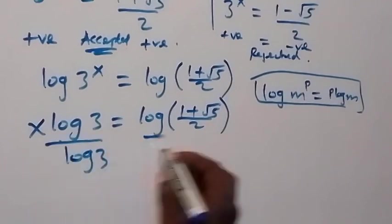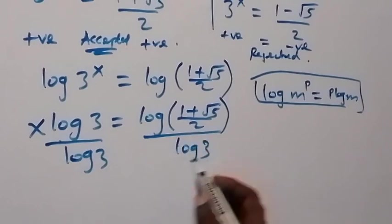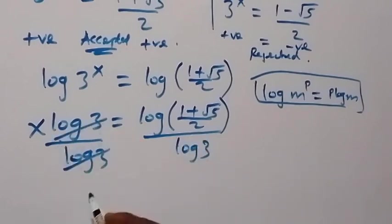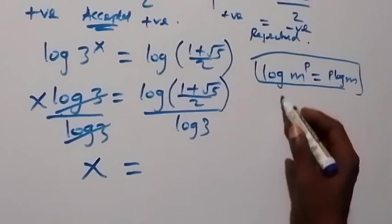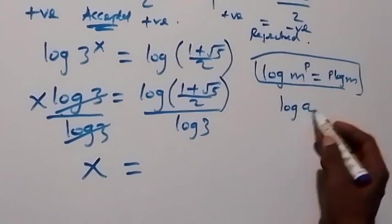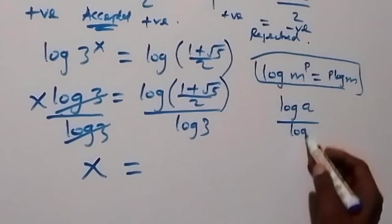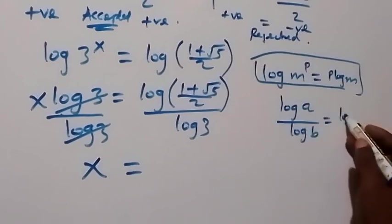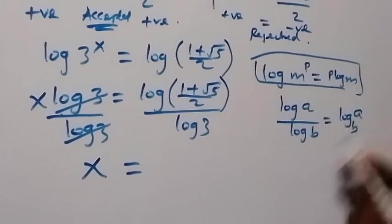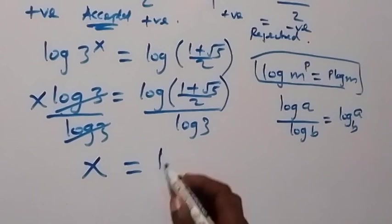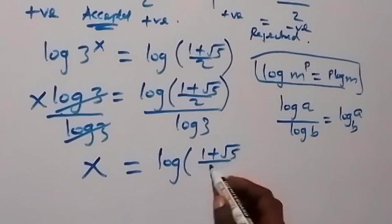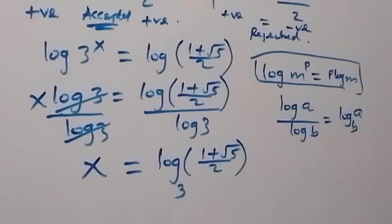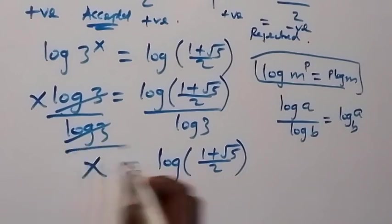Dividing both sides by log 3, log 3 cancels and we get x equals log of 1 plus root 5 over 2, divided by log 3. Applying the change of base rule — log a over log b equals log a to base b — we can write x equals log base 3 of 1 plus root 5 over 2.